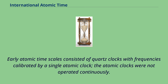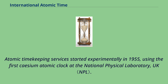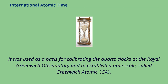Early atomic timescales consisted of quartz clocks with frequencies calibrated by a single atomic clock; the atomic clocks were not operated continuously. Atomic timekeeping services started experimentally in 1955, using the first cesium atomic clock at the National Physical Laboratory, UK. It was used as a basis for calibrating the quartz clocks at the Royal Greenwich Observatory and to establish a timescale called Greenwich Atomic.